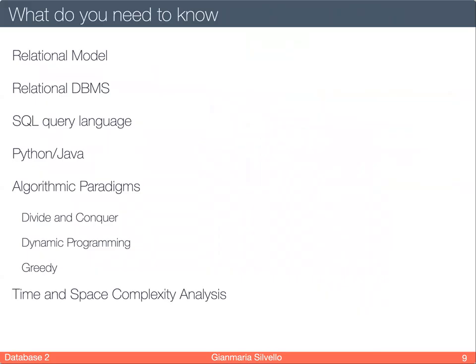What are the prerequisites of this course? You need to know the relational model very well, even though we will dive deeper and learn more about advanced relational research problems. You need to have studied the relational model, used it and used relational DBMS. You need to know the SQL query language, some programming languages, especially Python and/or Java. You need to know algorithmics, especially algorithmic paradigms like divide and conquer, dynamic programming, the greedy paradigm and time and space complexity analysis.